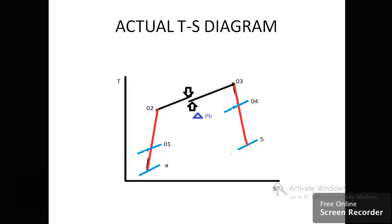In the actual T-S diagram, the components — diffuser, compressor, turbine, and nozzle — undergo non-isentropic processes because entropy varies from constant values. The combustion chamber also has losses due to pressure losses and so on. The reasons behind these non-isentropic values and incomplete combustion are due to losses present in the particular components. Let us see the component losses one by one.